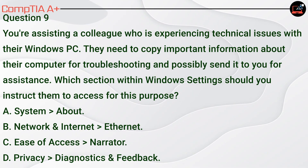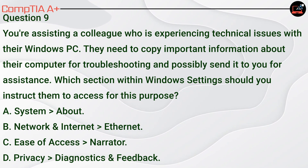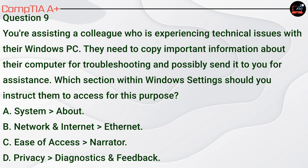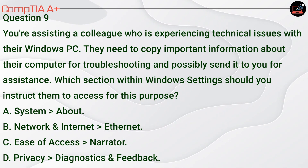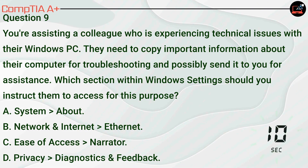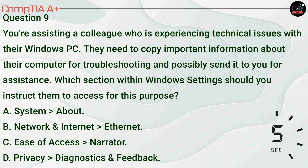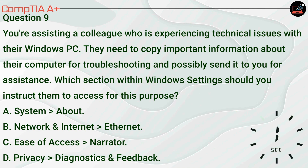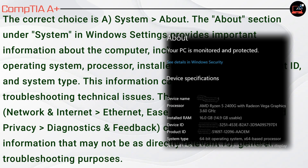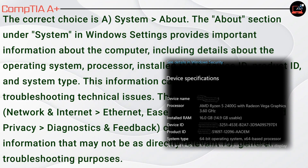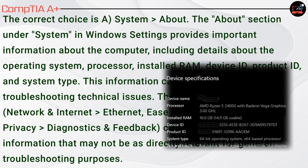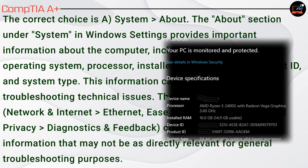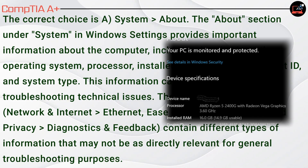Question 9. You're assisting a colleague experiencing technical issues with their Windows PC. They need to copy important information about their computer for troubleshooting and possibly send it to you for assistance. Which section within Windows settings should you instruct them to access? A, System > About. B, Network and Internet > Ethernet. C, Ease of Access > Narrator. D, Privacy > Diagnostics and Feedback. The correct choice is A, System > About. This section provides important information including details about the operating system, processor, installed RAM, device ID, product ID, and system type — all very useful for troubleshooting technical issues. The other sections contain different types of information not as directly relevant for general troubleshooting.